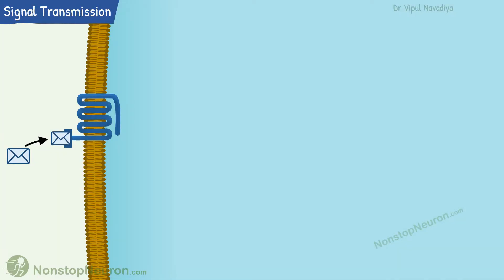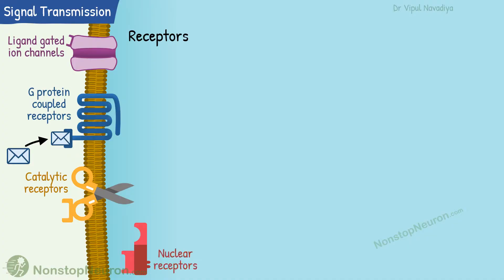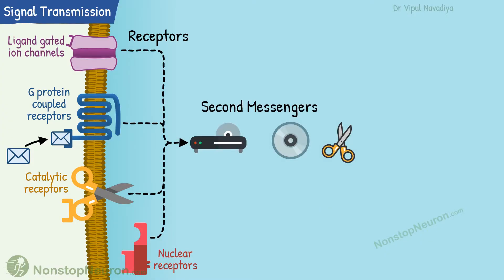The intracellular part of signaling starts with the binding of the ligand with the receptor. Various types of receptors are ligand-gated ion channels, G-protein coupled receptors, catalytic receptors, and nuclear receptors. Downstream to these receptors are multiple second messengers. One messenger passes the message to the other messenger. This transfer of message occurs in the form of activation or inactivation of the downstream messenger.